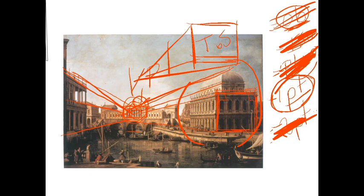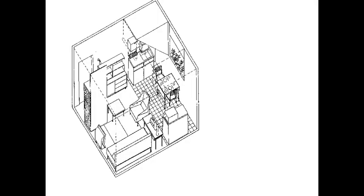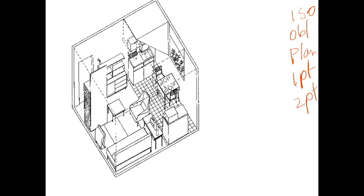Alright, let's move on to the next one. So what is this? Again we've got our list of possibilities: isometric, oblique, planometric, one-point, and two-point. The first thing we're going to do is look for some actual rectangles — shapes we know to be rectangles that actually look like rectangles in this drawing.